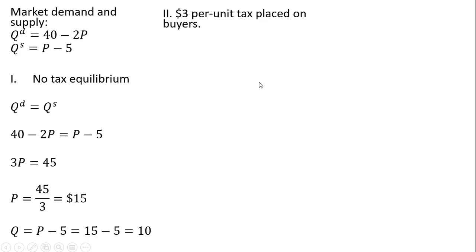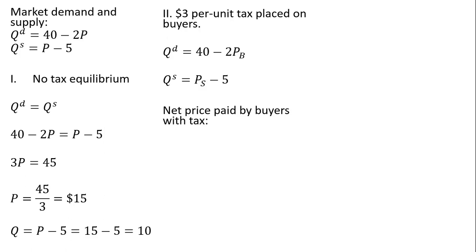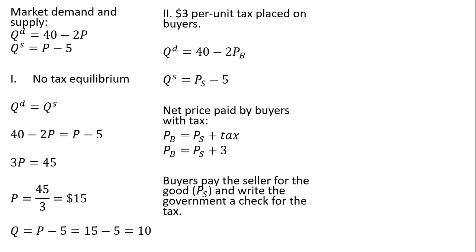Now we're going to impose a tax in this market on buyers. The tax will equal $3 per unit, so every time a buyer buys the product, they'll also have to pay — write a check to the government for $3. Here's our quantity demanded and our quantity supplied. You'll notice I am subscripting the prices, because when there's a tax, there's a difference between what buyers pay and sellers receive. The net price paid by buyers with a tax equals the price they pay the sellers for the good, plus the $3 tax that buyers submit to the government.